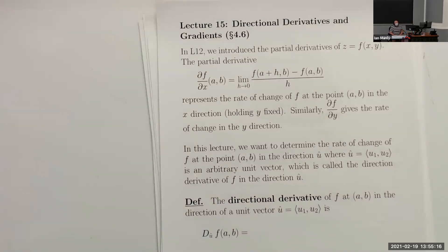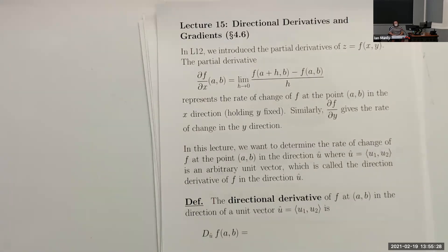Welcome back to Calculus 3. So far in this section, we've been learning about derivatives of multivariable functions. We take derivatives in the form of partial derivatives, where we see the rate of change if we change x but hold everything else constant, or maybe we change y and hold all the other variables constant. We could also do a similar thing for functions of more than two variables.